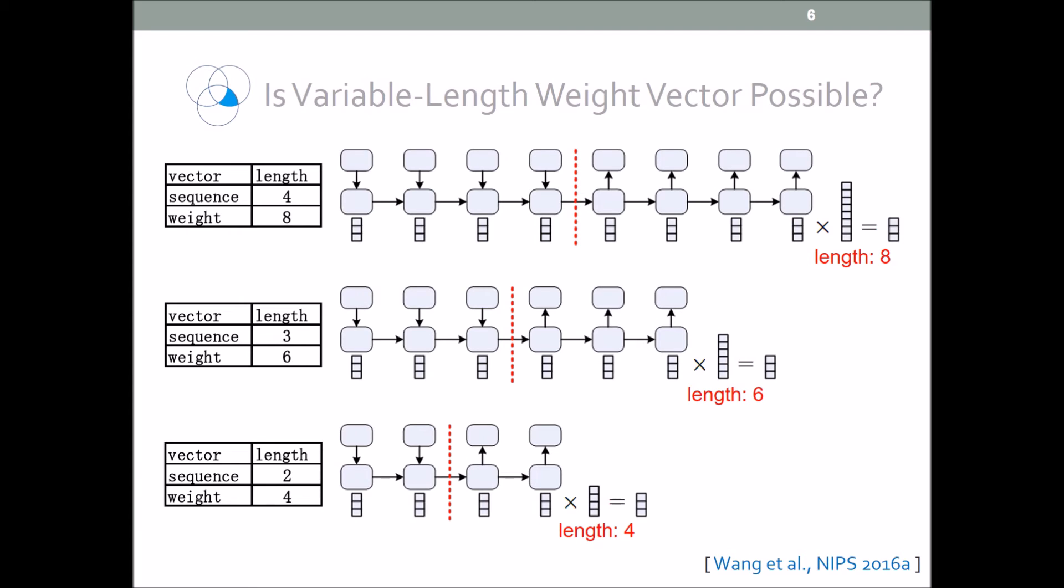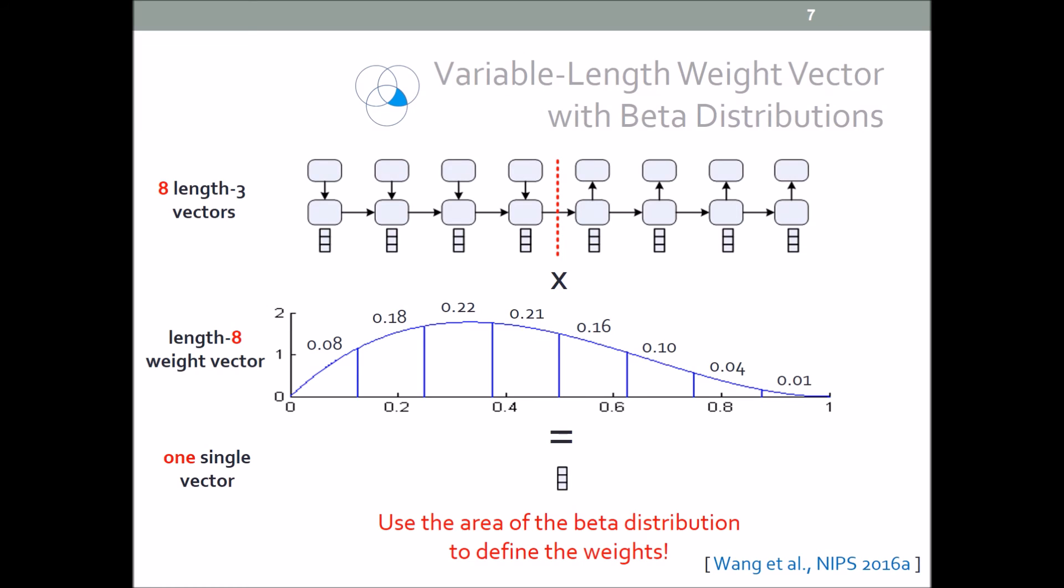However, if we use another sequence of length 3, then we need a length 6 vector. If we have a sequence of length 2, we would need a length 4 vector. It seems impossible to directly learn a variable length vector. So in this work, we propose to use the area of probability density function to define the weights.